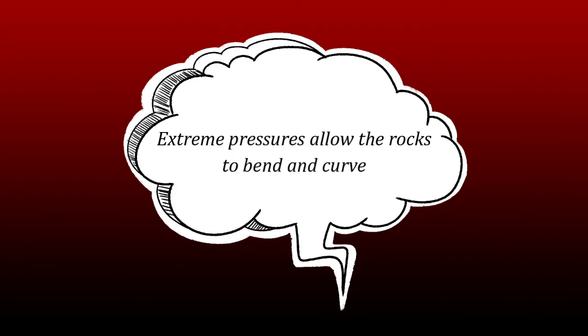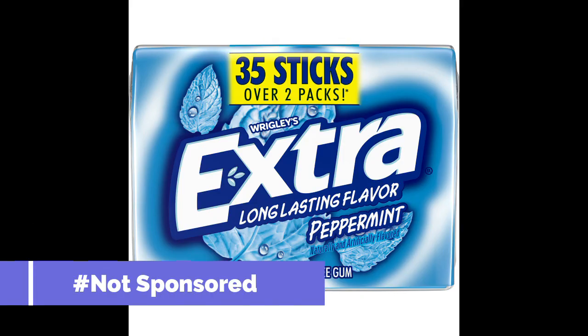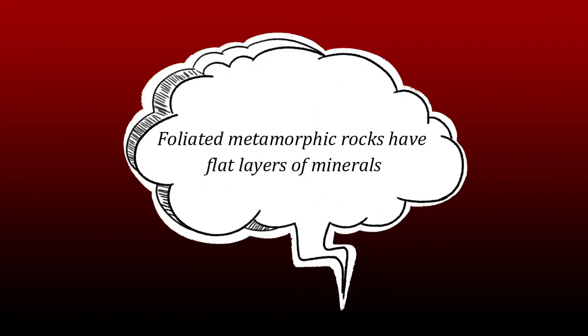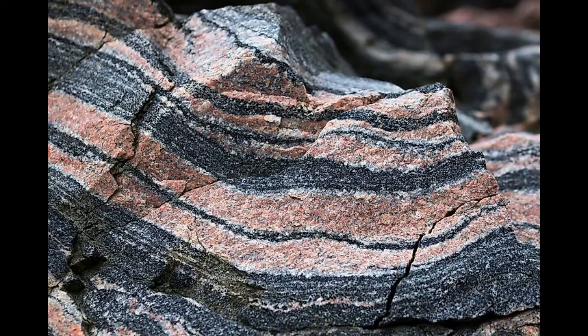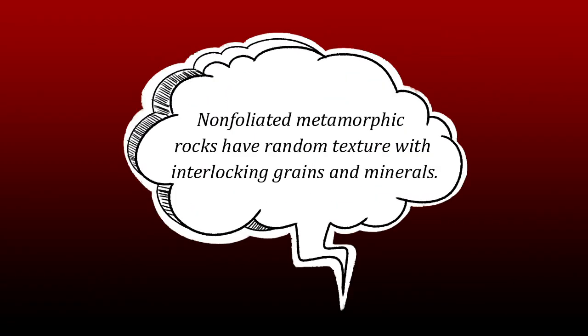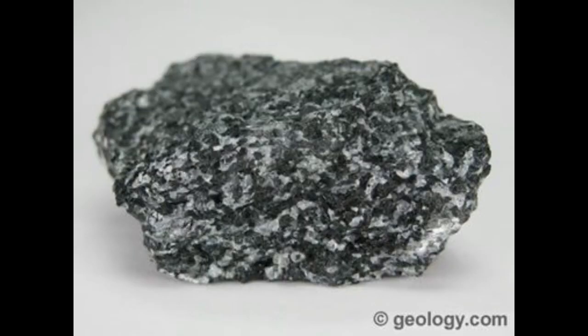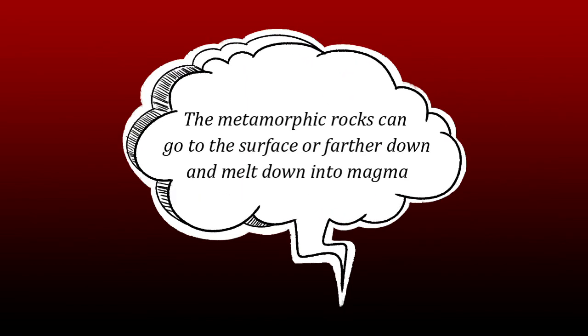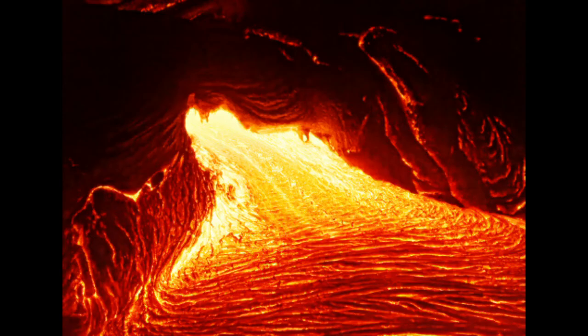Coal is a biochemical sedimentary rock. This is how metamorphic rocks are formed. Gneiss and slate are examples of metamorphic foliated rocks. Marble is a very good example of a non-foliated metamorphic rock.